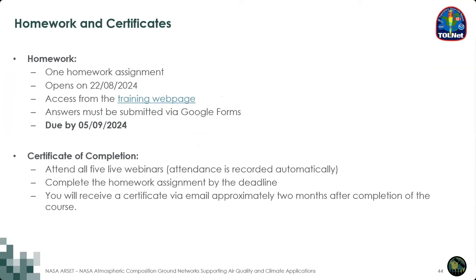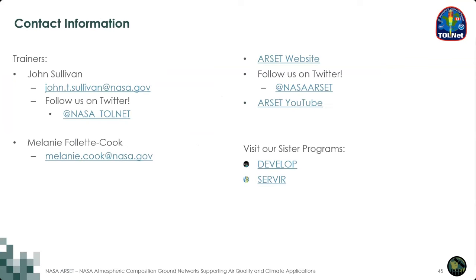A reminder that this training series has one homework assignment, accessible from the training webpage starting August 22nd; all answers should be submitted using Google Forms by September 5th. Certificates of completion will be issued to participants who attend all five live trainings and submit the homework before the deadline. Certificates are typically issued by email about two months after the training. This additional information slide has contact information with emails for myself and Dr. Sullivan, as well as links to the RSET website, YouTube channel, Twitter/X, and our sister programs DEVELOP and SURVEYOR.